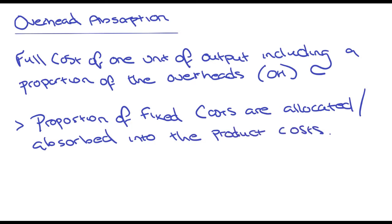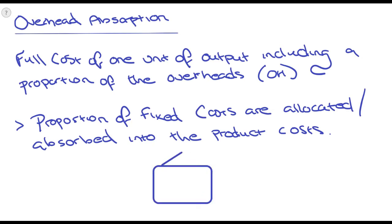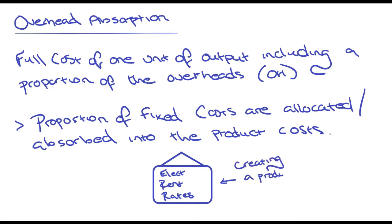It's called absorption costing because a proportion of the fixed costs are allocated or absorbed into the product. So say if you had a building — in here you've obviously got electricity bills, rent bills, and rates bills. But in here you are creating a product. So the cost to make that product — you obviously need materials, and you need people to make the item from the materials.